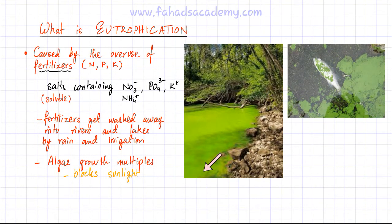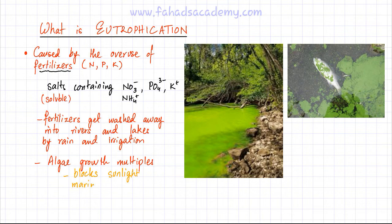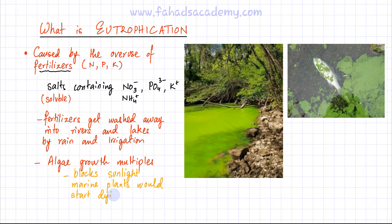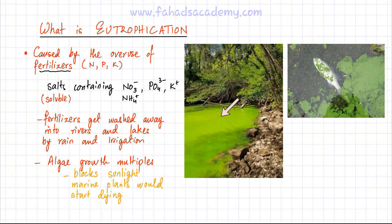This top green algae layer prevents sunlight from reaching the water. Sunlight is necessary for marine plants, so marine plants inside the water bodies start to die. These marine plants are very important because they produce oxygen that gets dissolved in the water, allowing marine animals and fishes to breathe inside the water.